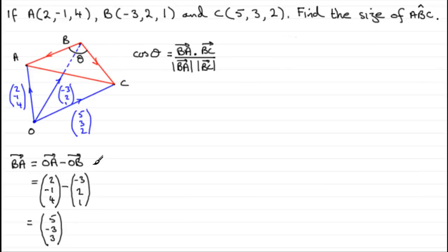Similarly, we've got to work out the other vector, BC. BC would be OC minus OB. What we get is (5, 3, 2) take away (-3, 2, 1), and you end up with (8, 1, 1).